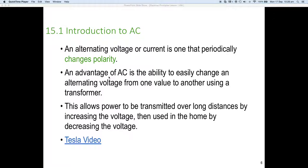An advantage of AC is the ability to easily change an alternating voltage from one value to another using a thing called a transformer. You'll learn more about transformers in AC machines, but because the polarity is changing, it means the magnetic field that's created is also changing.